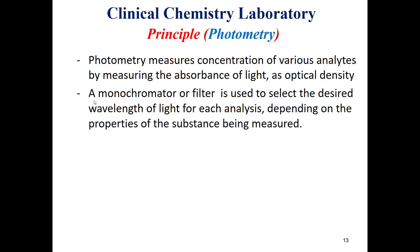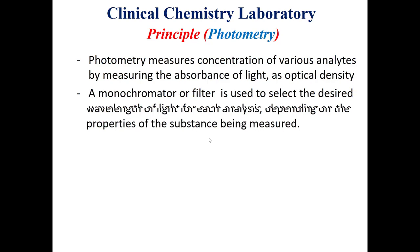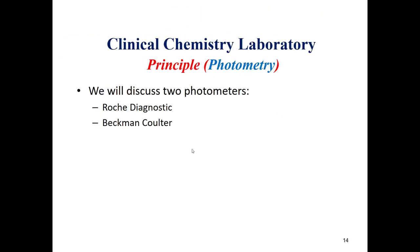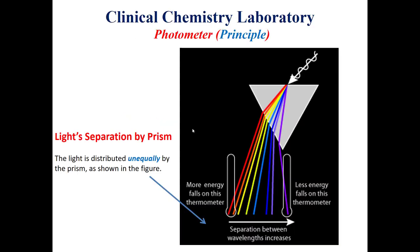In order to have this measurement at a specific wavelength, a monochromator or filter is used to select the desired wavelengths for each analysis, depending on the properties of the substance being measured. Now we'll discuss two types of commercial photometers: the one manufactured by Roche Diagnostics and the one manufactured by Beckman Coulter.